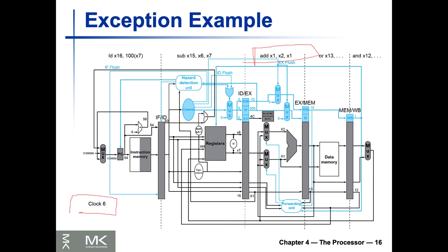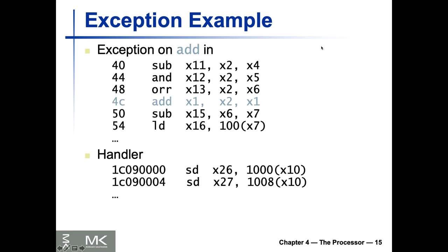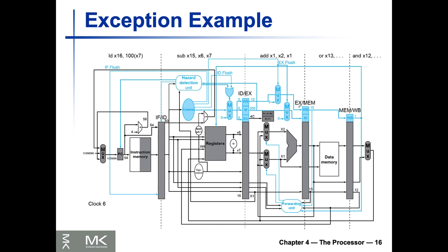We detect the exception at clock 6 at the EX stage. At this point we need to save the address of the ADD instruction to the SEPC register — the address would be 4C hex. We use SEPC to hold the address at the time the exception happened. This exception causes control signals to be set near the end of the clock cycle, and we have to flush the ADD instruction by setting its signals to zero.